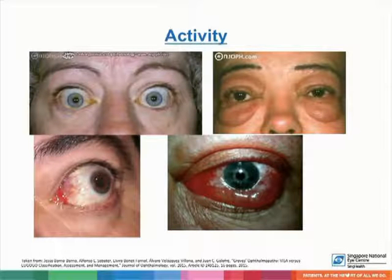In this slide, we see patients with obvious signs of thyroid eye disease, such as lid retraction, lid edema and swelling, as well as caruncular edema and chemosis.